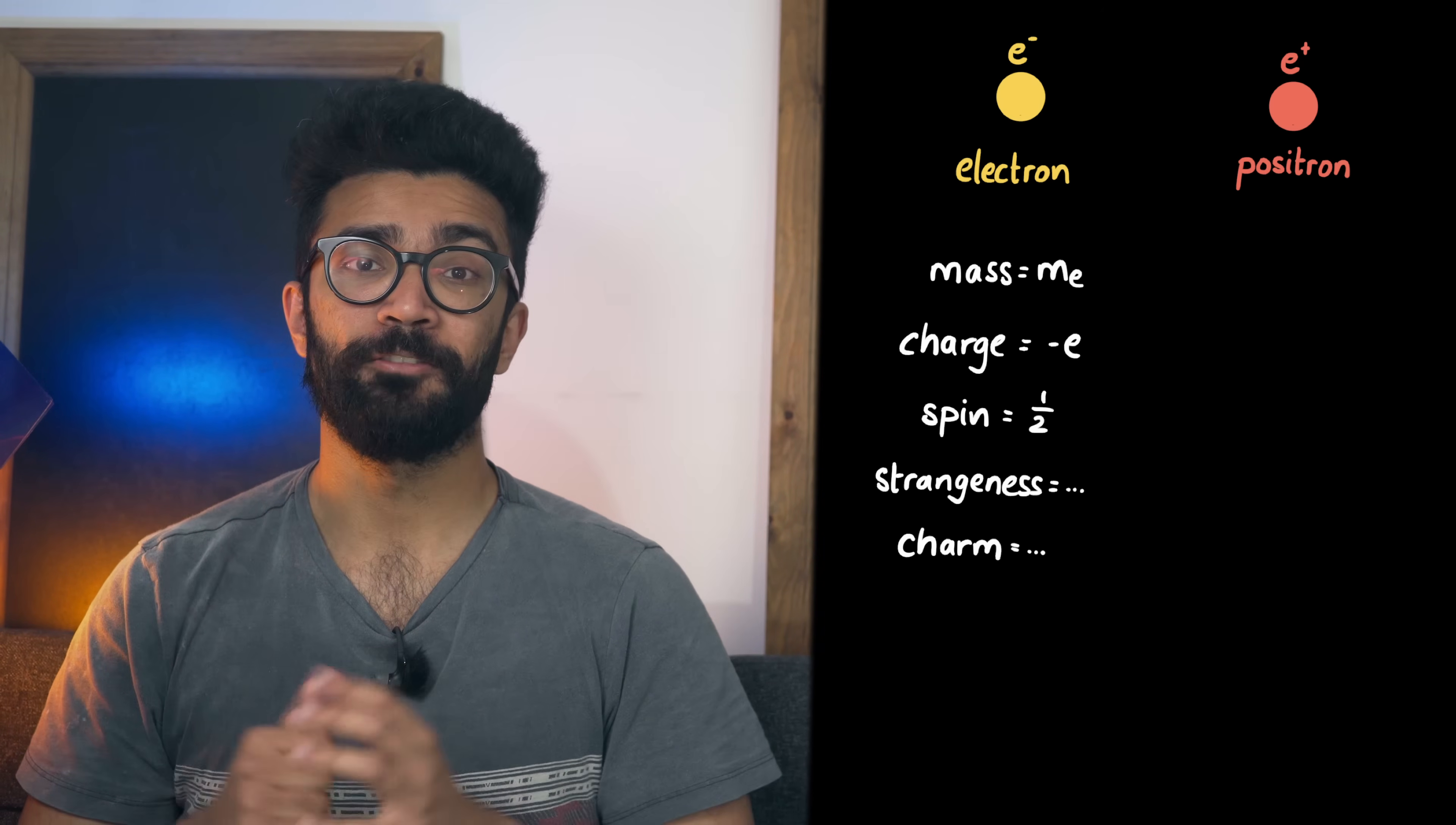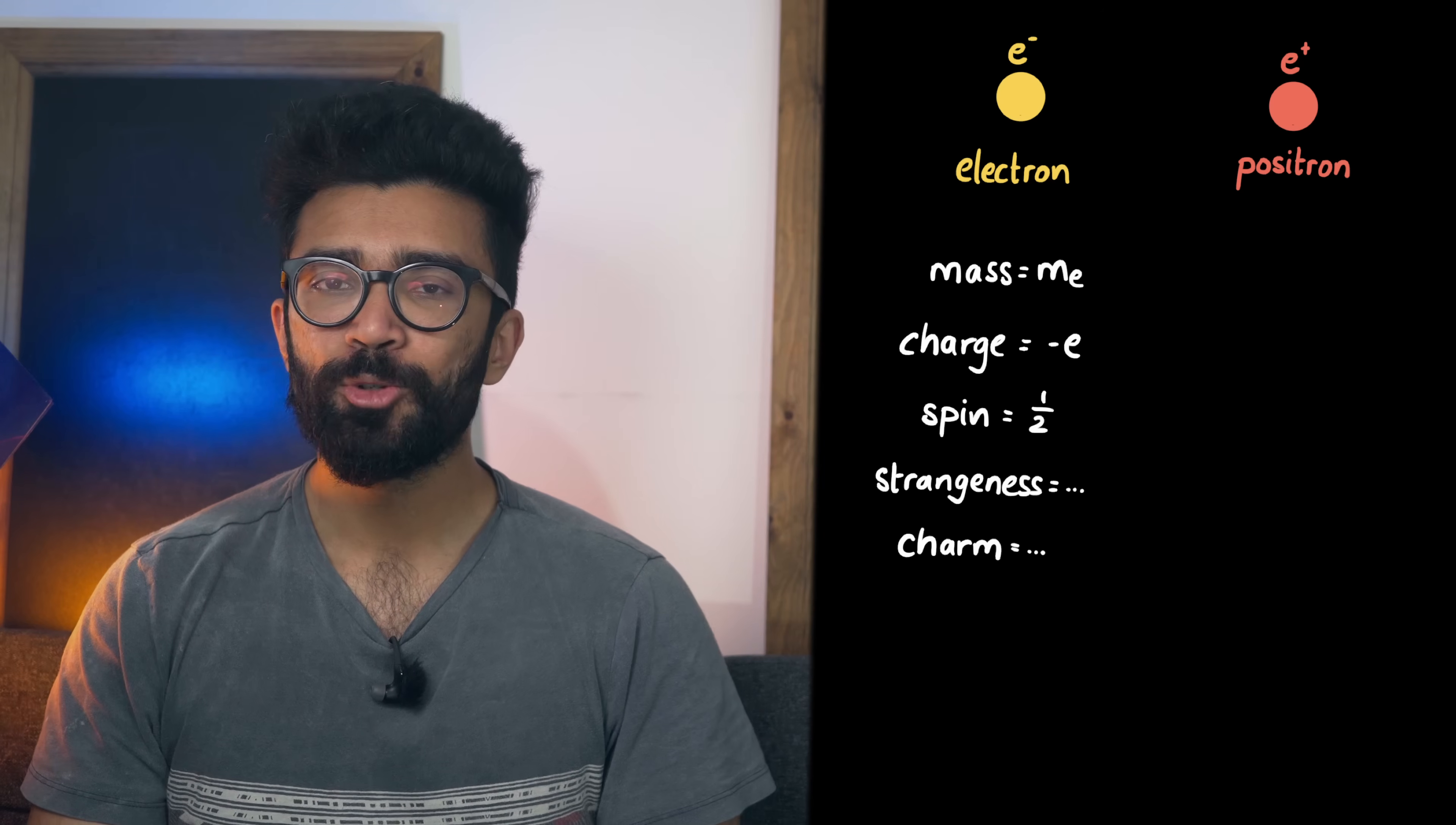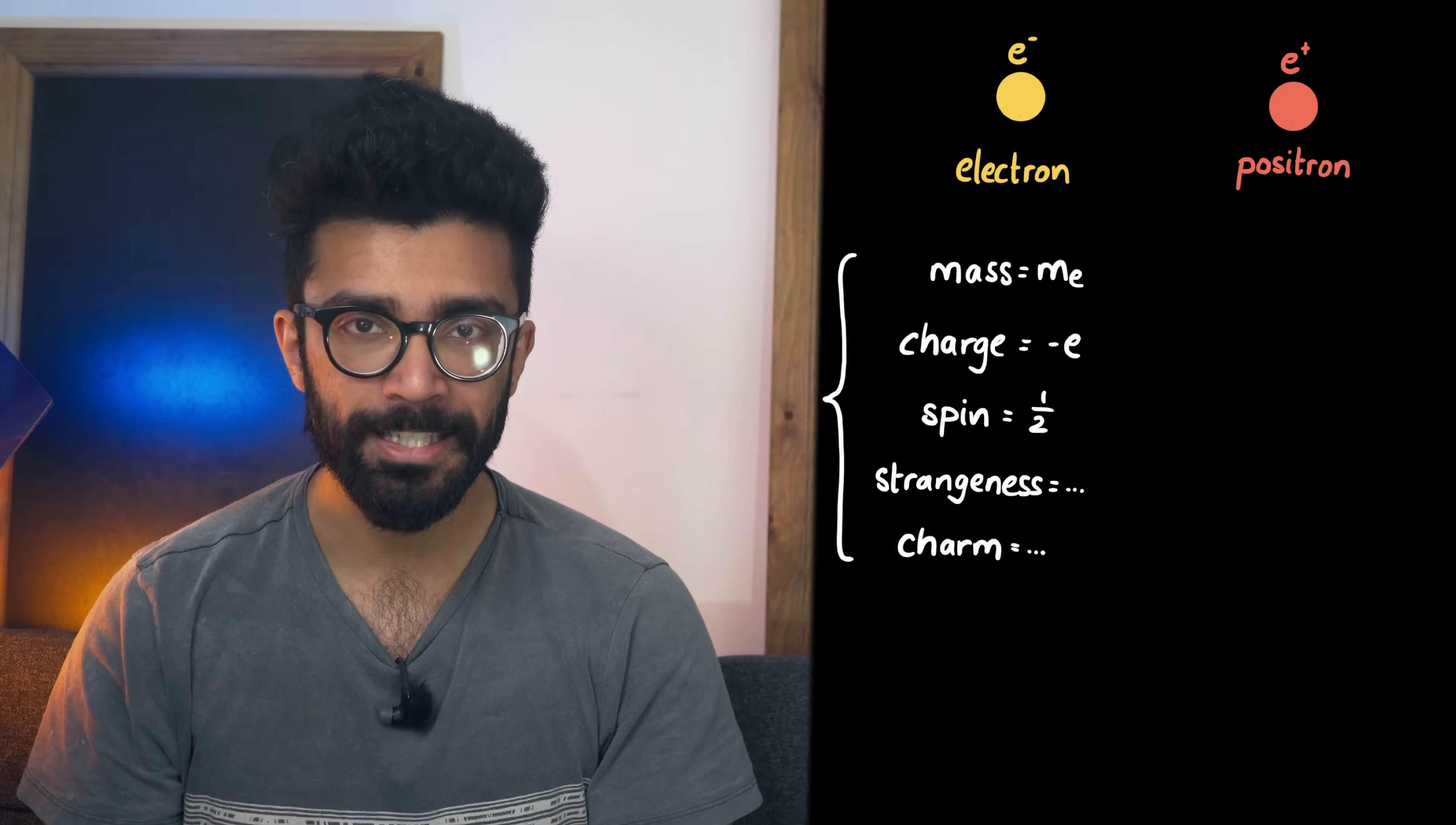Yes some of these properties sound very weird like strangeness but these are just names that physicists came up with for reasons we'll discuss later as well as in future videos. Now any two particles with all of the same set of these descriptors are the same kind of particle. Two electrons for example will have all of the same values for all of these descriptors.